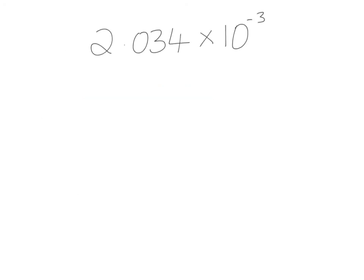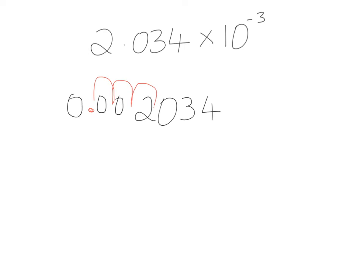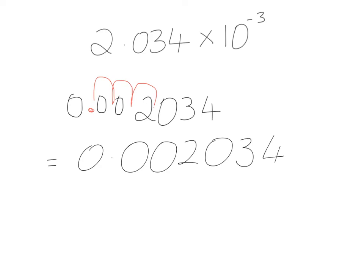Last one — we're just going to convert this to an ordinary number. We write down our non-zero numbers, and we're told it's to the power of minus 3, which means I'm moving 3 places — but because it's a minus, I'm moving 3 places to the left. So moving 1, 2, 3: the decimal point goes in here. Add in zeros, and this time we do include the leading zero because we need it, giving us 0.00203. Remember, you can check your answer by making sure that if you converted this back to standard form, it should match up with the original question.